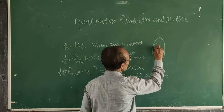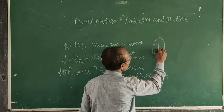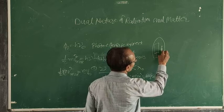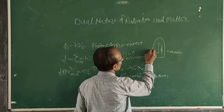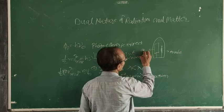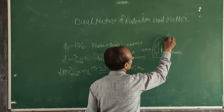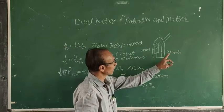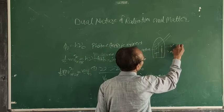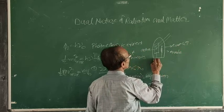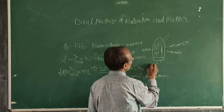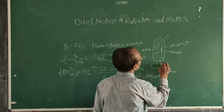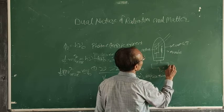The photocell consists of two parts. One is a concave-shaped metallic plate, and in front of it we have a metallic rod. That metallic rod is known as the anode, and the concave-shaped metallic plate is known as the cathode. Light falls on the concave-shaped metallic plate so that electrons get emitted and are collected by the anode. It is an evacuated glass tube connected with a DC source, and we can use a microammeter in series.